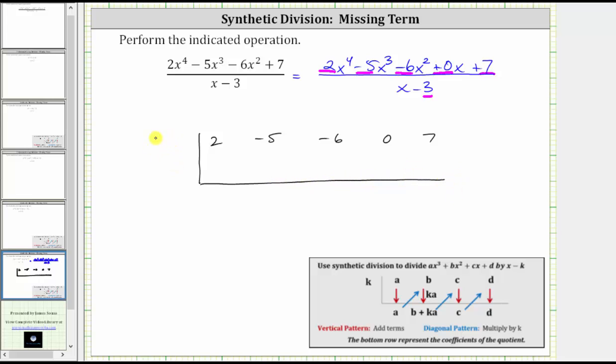To the left of the table, we place the value of k, where again k is found by having the divisor in the form of x minus k, so k is positive three. Because we have x minus three, k is positive three. If the divisor was x plus three, k would be negative three.